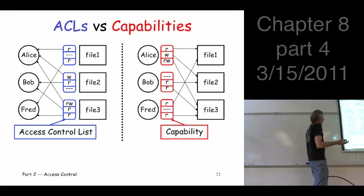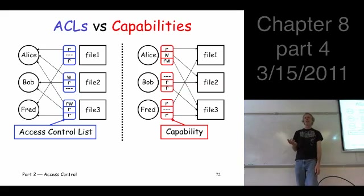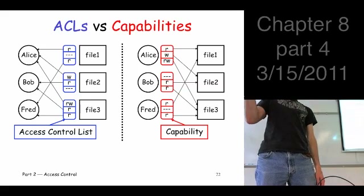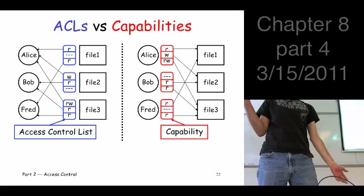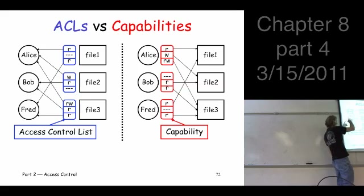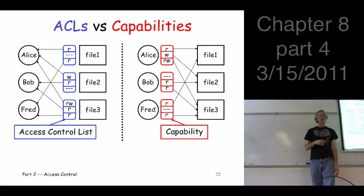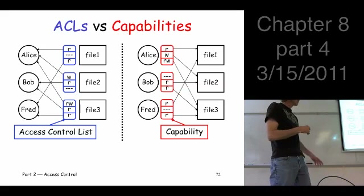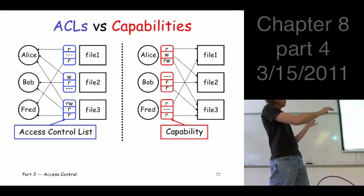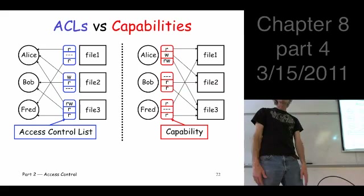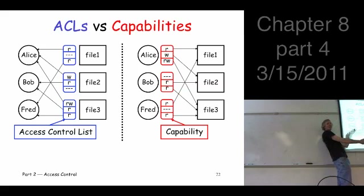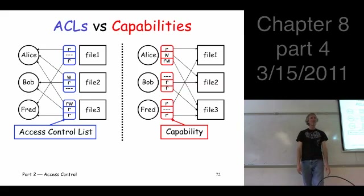If you compare access control lists and capabilities, is there any difference? It's the same data — you've taken the same matrix and just chopped it up in two different ways. There couldn't possibly be any difference, right? Well, here's a very simple setup: three users and three files. Here's the view on the left for access control lists and on the right for capabilities — same permissions. So is there any practical difference here?